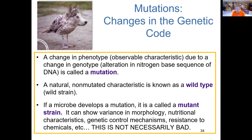When we talk about a mutation, we're talking about a change in the genotype, in the nitrogenous base of the DNA, and that can result in a change in the phenotype for that particular trait. Know the difference between an organism's phenotype and its genotype. The genotype determines the phenotype. The phenotype is the physical characteristic being exhibited by the organism, and the genotype is what genes are present, inherited from the parents, that determine what that trait is. We're also going to define the difference between the wild-type strain and the mutant strain.